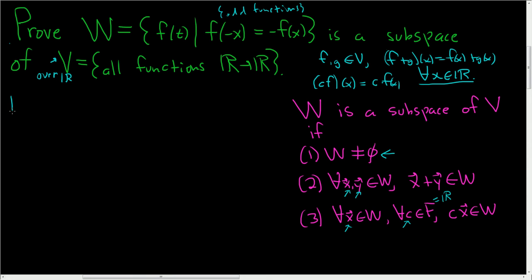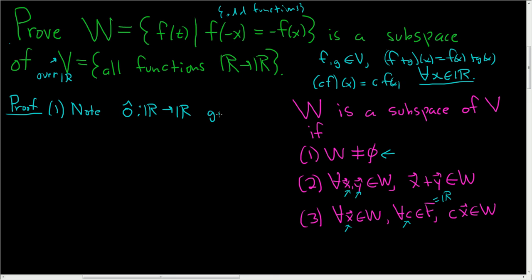Let's carefully go through the proof. First, we have to show that W is non-empty — meaning there exists a function that is odd and is in W. That function is the zero function. The zero vector, let's call it zero-hat, is given by: zero of x equals zero for all x in ℝ. The claim is that this is odd.